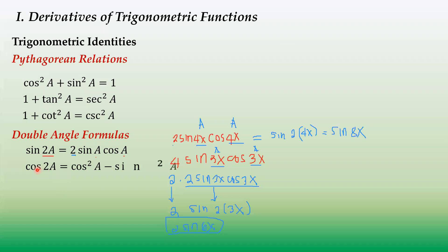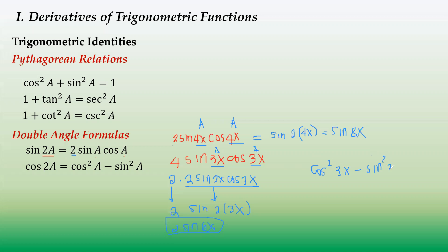Another double angle formula is cosine of 2a, which equals cosine squared a minus sine squared a. If you have that pattern, you can write it as cosine 2a. For example, cosine squared 3x minus sine squared 3x — since both angles are 3x — equals cosine of 2 times 3x, or cosine 6x.